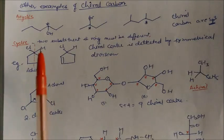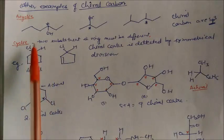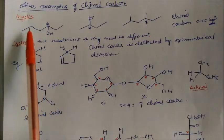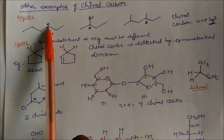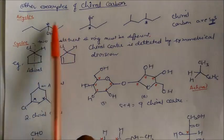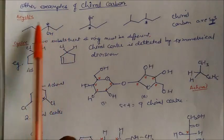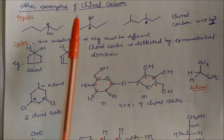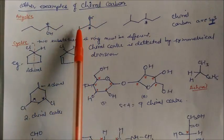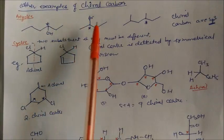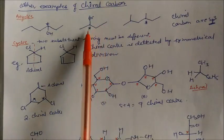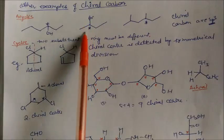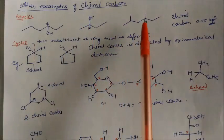Now let us see other examples of chiral carbon. This is the bond line notation of some acyclic compound. This carbon is a chiral carbon because it has C2H5 as one different group and one hydrogen, giving four different groups. In this case, there is Br, CS3, a two-carbon group, and hydrogen. So again this carbon is your chiral carbon.